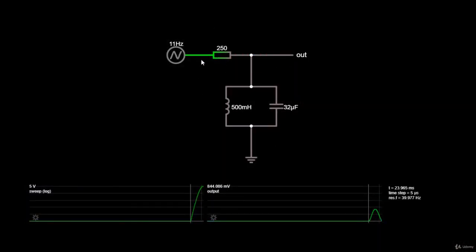Alright, here we are. Our bandpass filter is composed of a resistor of 250 ohms, an inductor of 500 mH, and a capacitor of 32 uF.